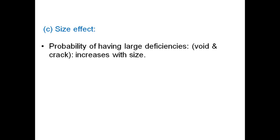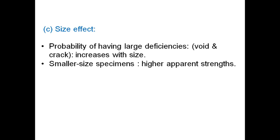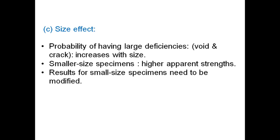There is size effect also. Probability of having large deficiencies, that is voids and cracks, increases with size. More the size, there is possibility of more deficiencies in terms of voids and cracks. The smaller size specimens therefore have higher apparent strength because there are less chances of cracks and voids. Results for small size specimens need to be modified therefore. A factor of 0.9 is to be used to modify the results. That means 10% of the strength has to be reduced to only 90% of the strength has to be taken.